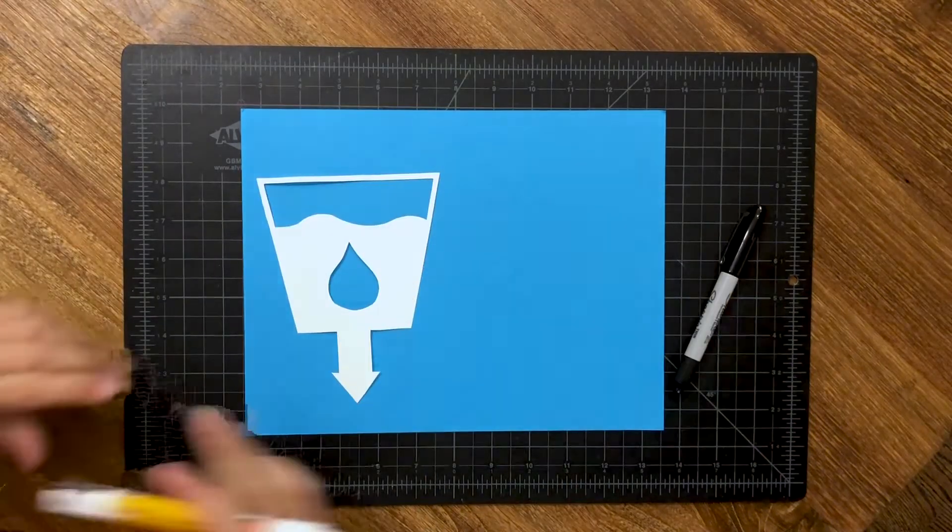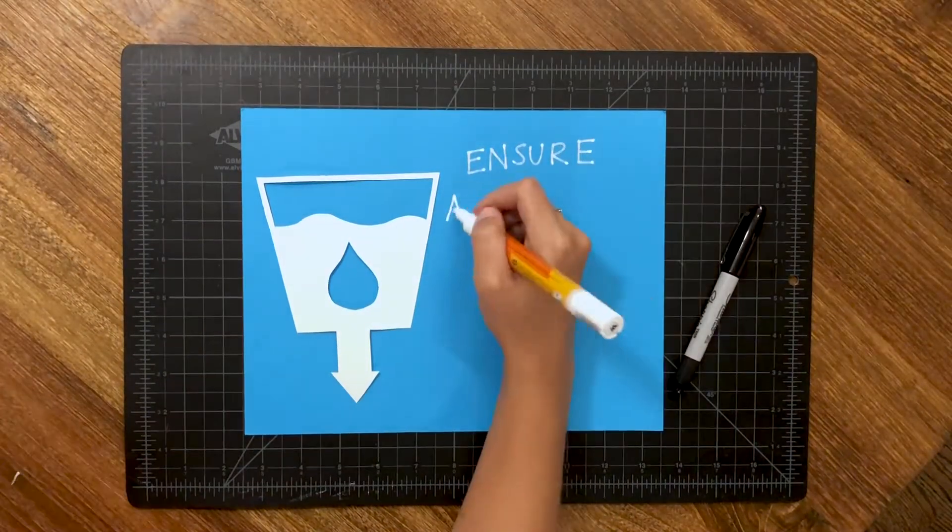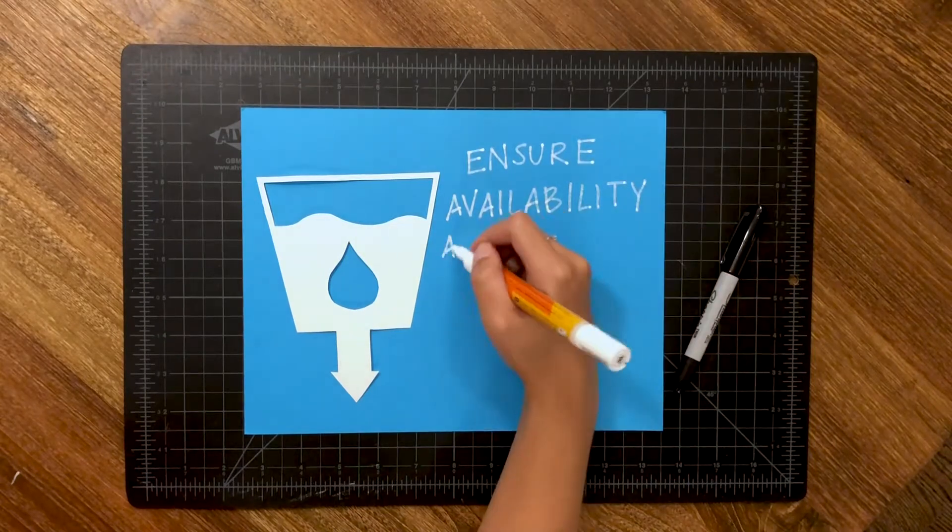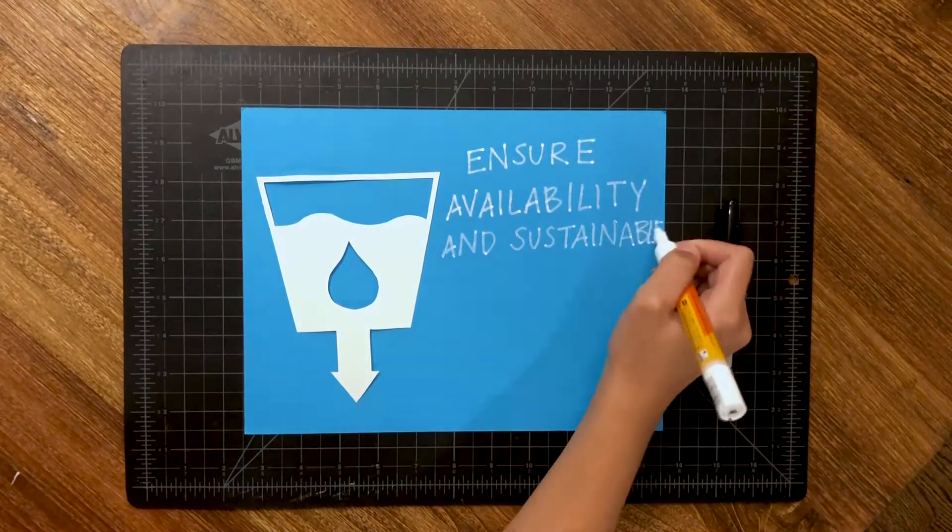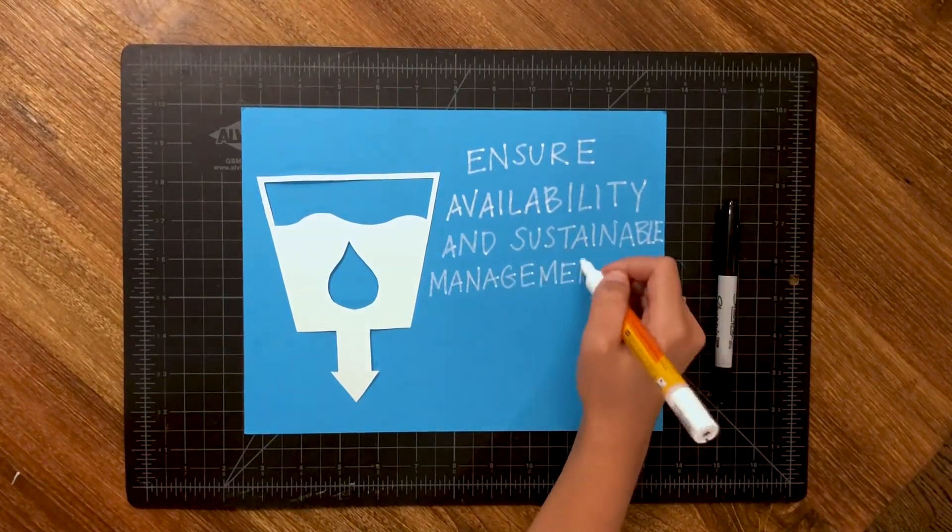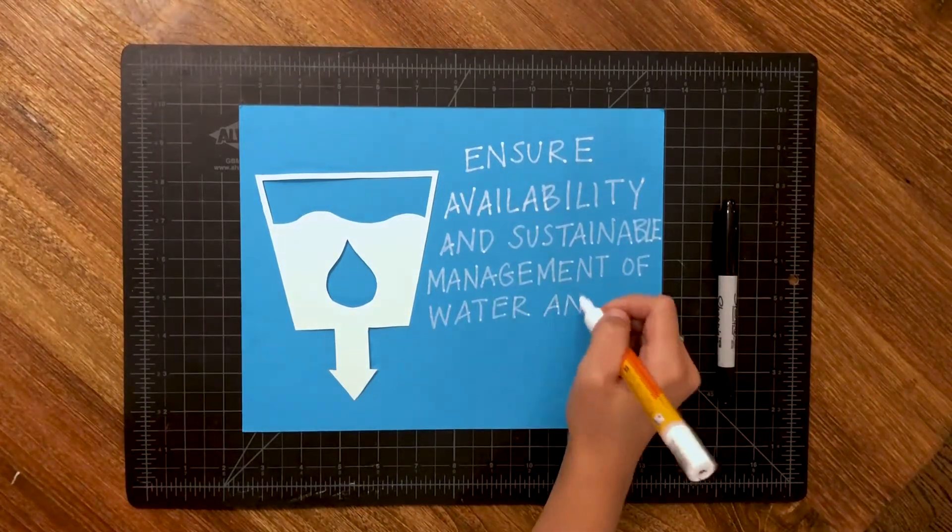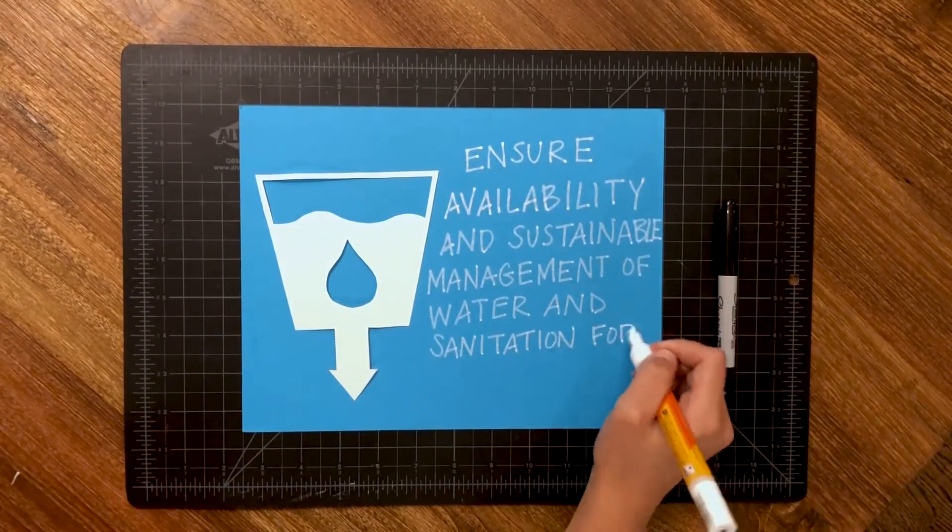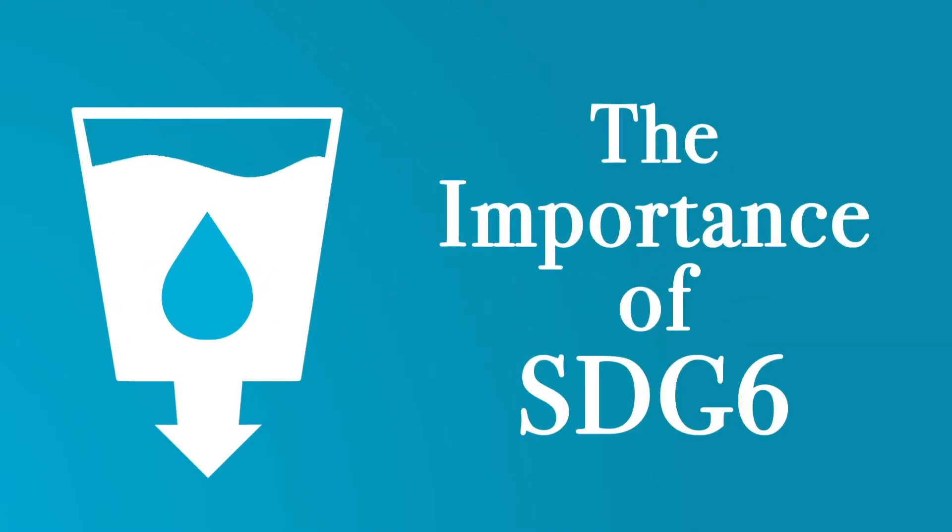This is Sustainable Development Goal 6. SDG 6 is critical to human health, environmental sustainability, and economic prosperity. Ensure availability and sustainable management of water and sanitation for all. SDG 6 is important. Here's why.